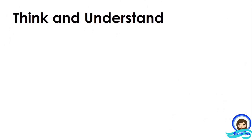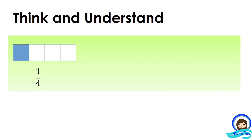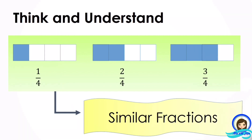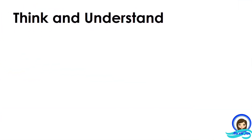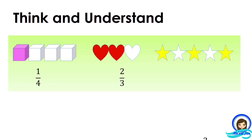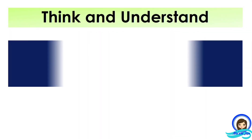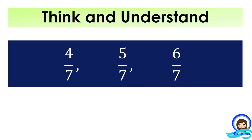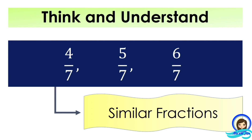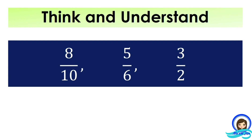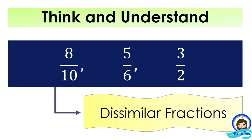Think and understand. 1/4, 2/4, 3/4 — they are similar fractions. 1/4, 2/3, and 3/5 — they are dissimilar fractions. 4/7, 5/7, and 6/7 are similar fractions. 8/10, 5/6, and 3/2 are dissimilar fractions.